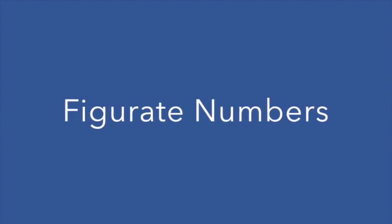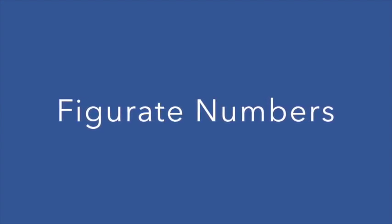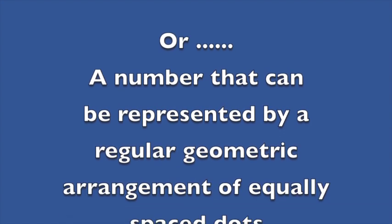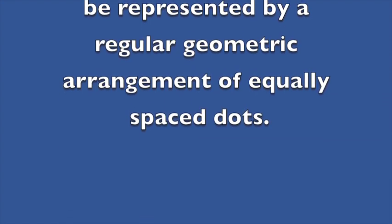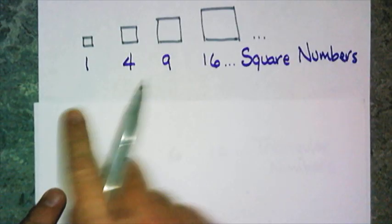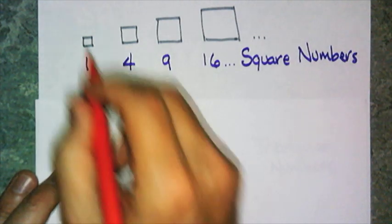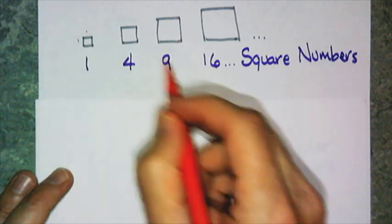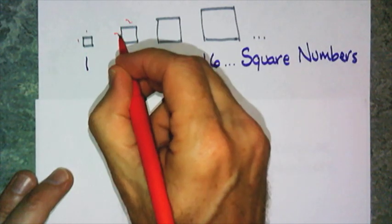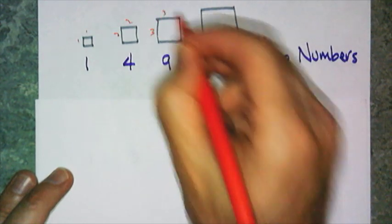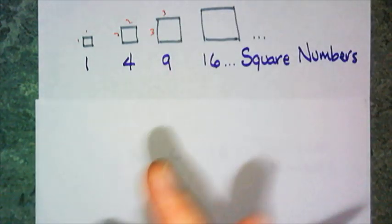Now to the meat and potatoes of today's lesson. We get into figurate numbers, and figurate numbers just means it's a sequence that has a figure that can be associated with the sequence. So let's start off with one that you are familiar with. I have the square numbers, 1, 4, 9, 16. These are the perfect square numbers, and because there's a square that can be associated with that, it's a 1 by 1 square is 1, a 2 by 2 square is 4, a 3 by 3 square is 9.